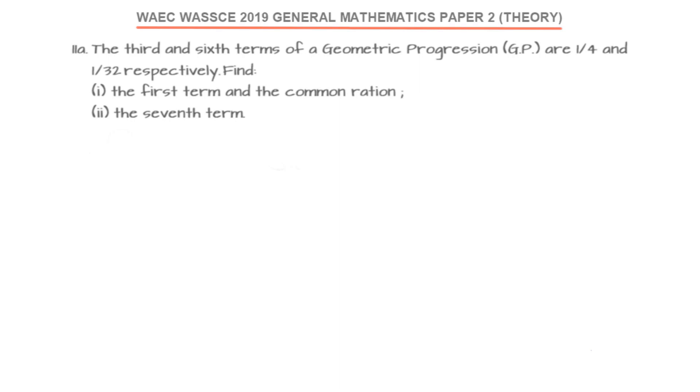The third and sixth terms of a geometric progression (GP) are 1/4 and 1/32 respectively. We have to find the first term and the common ratio, and also find the seventh term.